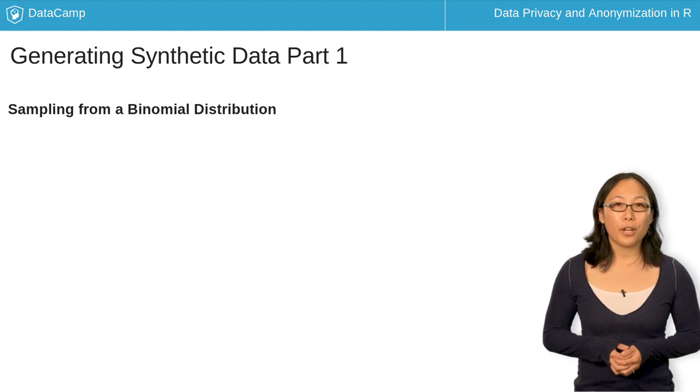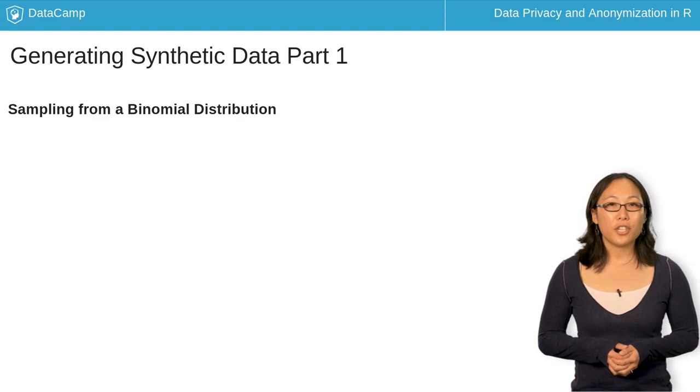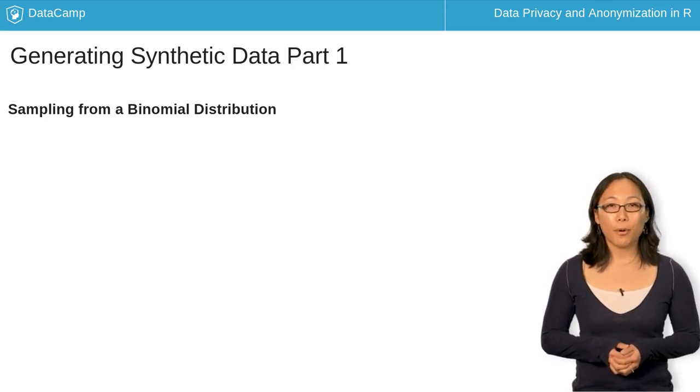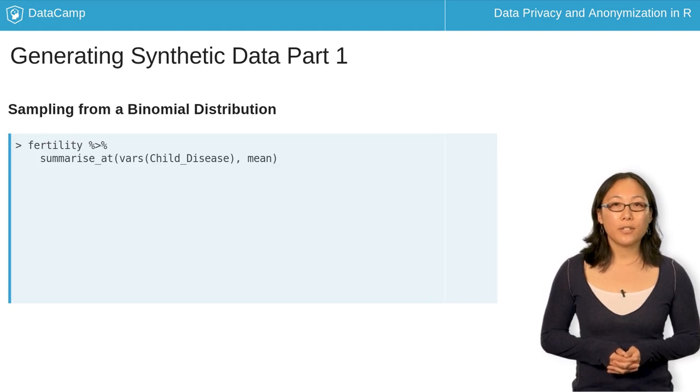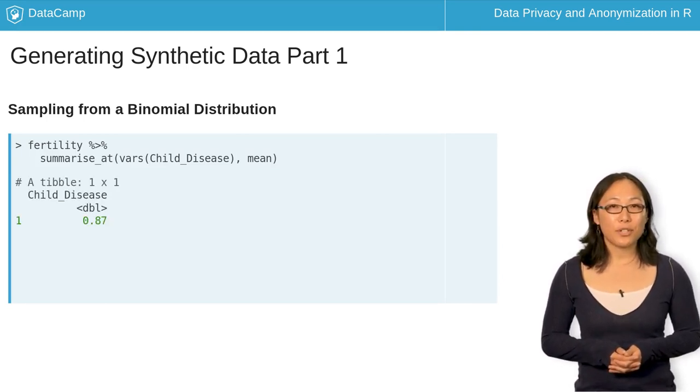Suppose you want to release participant information on childhood disease. You can generate a synthetic dataset by sampling from a binomial distribution. In order to sample from a binomial distribution, you must know the proportion of participants who had a childhood disease. To do this, we use summarizeAt to select the variable child disease and find the average using the mean function. You see that 87% of the participants experienced a childhood disease.